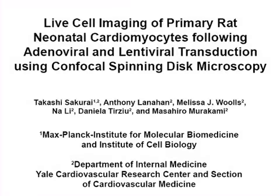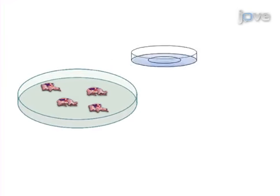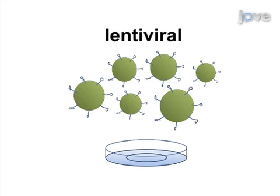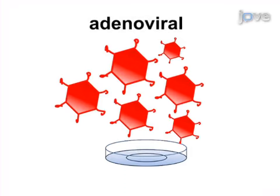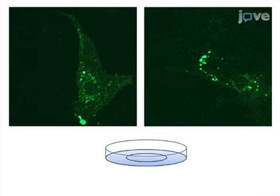The overall goal of this procedure is to acquire time-lapse images of primary rat neonatal cardiomyocytes following lentiviral and adenoviral transduction using confocal spinning disc microscopy. This is accomplished by first harvesting cardiomyocytes from rat pups and plating the cells on glass bottom dishes. The next step is to perform transduction of EGFP-tagged connexin 43 by lentivirus, followed by transduction of dominant negative FGFR1 by adenovirus in the cardiomyocytes.